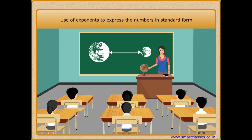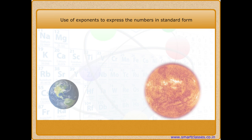Students, what are the units to measure large distances? In kilometers or miles? Good, but when these distances become very large, like the distance between the Earth and the Sun, then we use standard form to express these distances. We use exponents to express very large or very small numbers in their standard form.